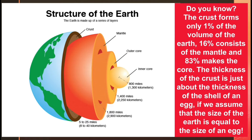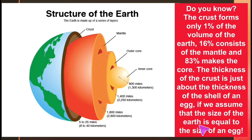The crust forms only 1% of the volume of the earth, 16% consists of the mantle, and 83% makes up the core. The thickness of the crust is just about the thickness of a shell of an egg, if we assume that the size of the earth is equal to the size of an egg.